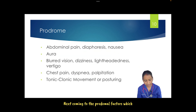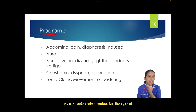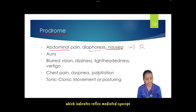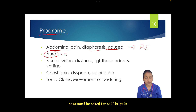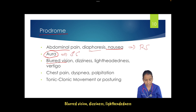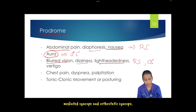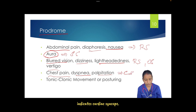Coming to prodromal factors: abdominal pain, diaphoresis, and nausea indicate reflex mediated syncope. Aura must be asked about to differentiate syncope from a seizure. Blurred vision, dizziness, and lightheadedness are associated with reflex mediated and orthostatic syncope. Chest pain, dyspnea, and palpitations indicate cardiac syncope.